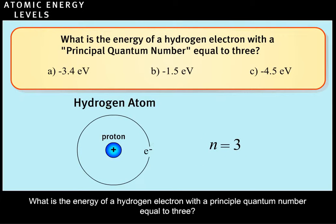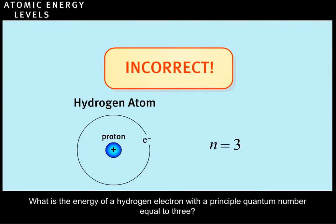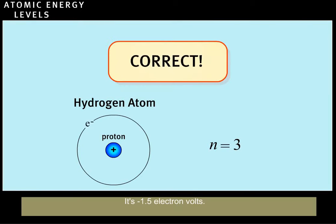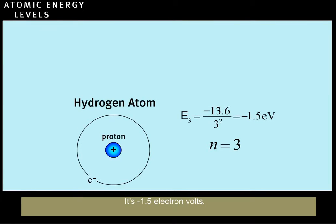What is the energy of a hydrogen electron with a principal quantum number equal to 3? Try again. Correct. It's 1.5 electron volts.